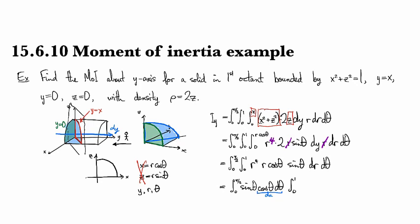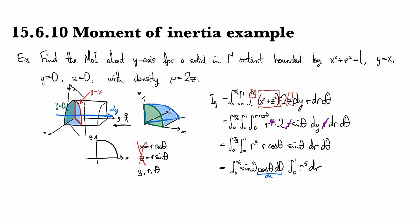Alright. And then the other one is we've got r to the fifth dr. And so that first integral is going to become sine squared theta over 2, 0 to pi over 2. And the other one is going to be r to the sixth over 6, 0 to 1. And putting that all together, the first one ends up being 1 and the second one ends up being 1 sixth. And so we get an answer of 1 sixth for our moment.